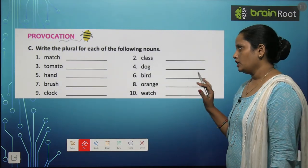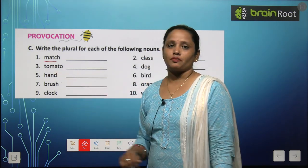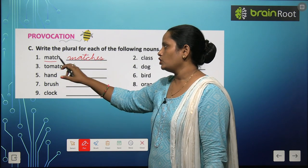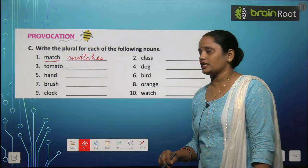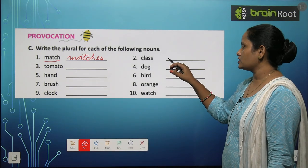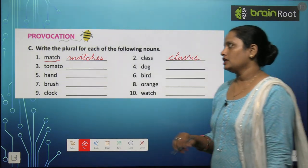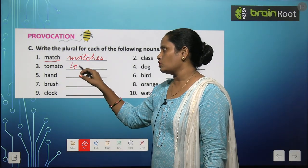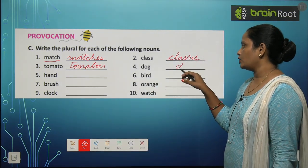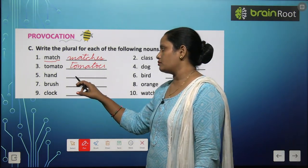Now let's move on to Exercise C: write the plural for each of the following nouns. Toh yahan kuch nouns hain, unke plurals likhne hain. First word is match — match ban jayega matches. ES lagayenge kyun? Kyunki last letters hain CH — toh jin bhi words ke last mein CH aata hai unke saath ES lagta hai. Class ban jayega classes. Tomato ban jayega tomatoes. Dog ban jayega dogs, hand becomes hands.